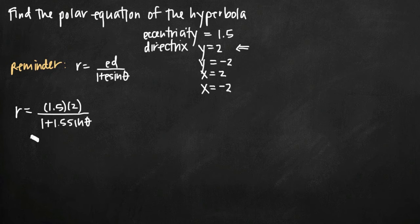And now all we need to do is simplify. So the first thing we want to do in the numerator: 1.5 times 2 is 3, so we'll get that in our numerator. But then in our denominator, we want to call 1.5 here 3 halves instead, so we'll get 1 plus 3 halves sine theta. We don't want to leave a decimal in our final answer.